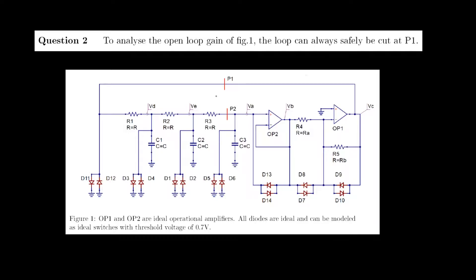If we would like to cut open an oscillator loop, we should always take care to do it at a node where the impedance is 0 or infinitely large, so an open circuit or a short circuit. The position p1 is connected to this output of an ideal operational amplifier op1.